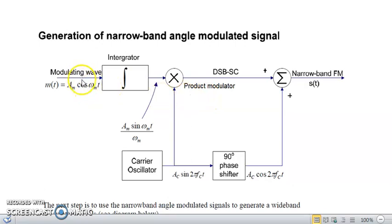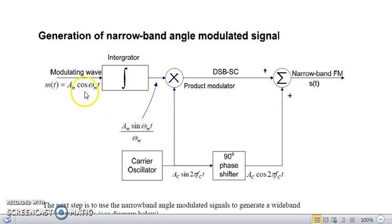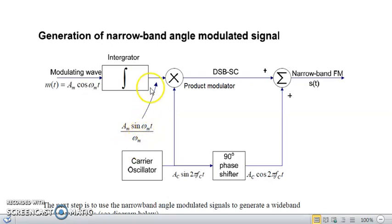This is the modulating wave which is passed through the integrator circuit for converting the cosine wave to a sine wave. By integrating am·cos(ωm·t), we get am·sin(ωm·t)/ωm at the output of the integrator.